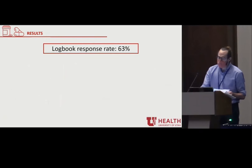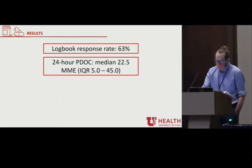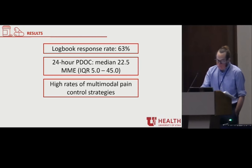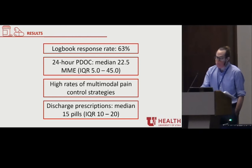Out of 99 patients, 62 returned a completed opioid logbook, and the median 24-hour PDOC was 22.5 morphine milligram equivalents — equivalent to less than three 5-milligram oxycodone pills. On multivariable analysis, older patients used fewer opioids, and patients with substance abuse used nearly five times more opioids during this 24-hour period. Almost all patients received a multimodal approach to pain, with 96% receiving Tylenol and 70% receiving NSAIDs. Discharge opioid prescriptions were a median of 15 pills, equivalent to 100 MME.